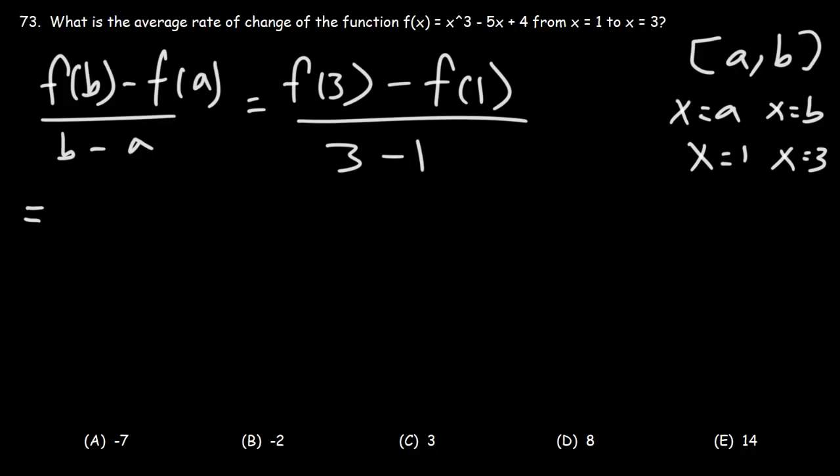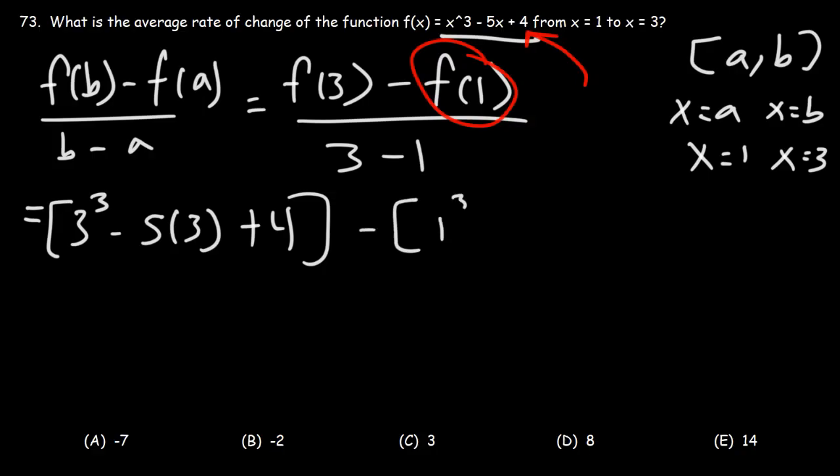So let's evaluate the function at 3. We're going to replace x with 3. So it's 3 to the third minus 5 times 3 plus 4. Now, let's calculate f of 1. So let's plug in 1 into that function. This is going to be 1 to the third minus 5 times 1 plus 4. And 3 minus 1 is 2.